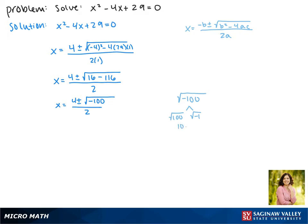This gives us 10 times i, and plugging this back into our solution we get x equals 4 plus or minus 10i over 2.